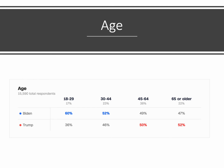Age is a major issue. Biden won the 18-to-29-year-old voters — 17% of the electorate — by 60 to 36%. He won the 30-to-44 voters — 23% of the electorate — by 52 to 46%. Now look at 45-to-64-year-olds, who were a huge 38% of the electorate: Trump won them barely, 50 to 49. But among over-65 voters, who were 22% of the electorate, Trump won decisively, 52 to 47. So the older you are, the more likely you were to vote for Trump; the younger you were, the more likely you were to vote for Biden. That's just one demographic variable.